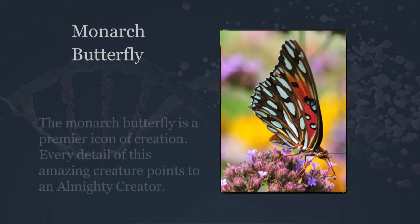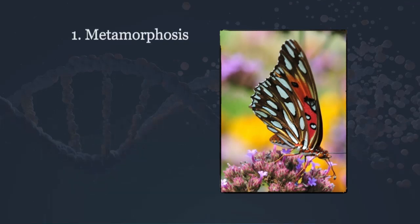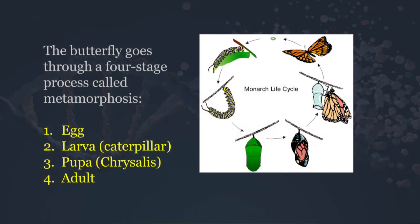The monarch butterfly is a premier icon of creation — every detail points to an almighty creator. We're going to look at about six different details, beginning with metamorphosis, a word meaning change or transformation. I think this is a great example of what Christ does to a sinner — he takes someone who thinks wickedly, talks wickedly, lives for himself, and transforms that person into a servant of the Lord who wants to pray and praise God, loves the house of God and the people of God.